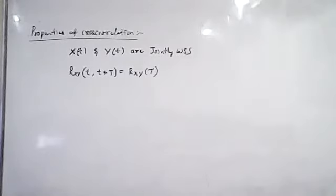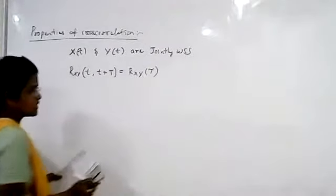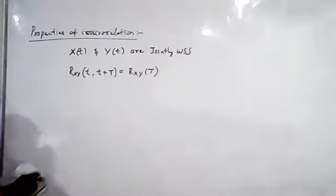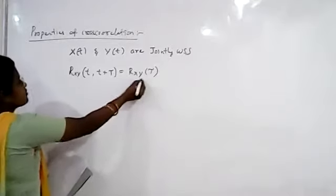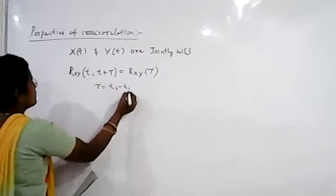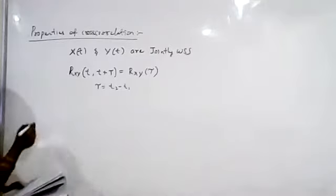Properties of cross-correlation. Here, we consider two random processes x(t) and y(t), and these two random processes are jointly wide-sense stationary. If these two random processes are jointly stationary, then the cross-correlation function will be a function of tau — the time difference. It depends on tau; it does not depend on t. Then the properties of cross-correlation are given like this.